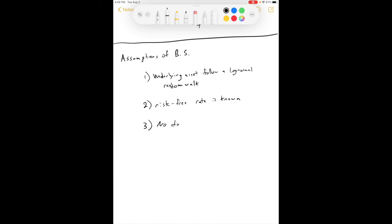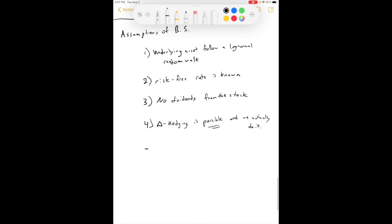Number three, there are no dividends. Okay? No dividends from the stock. Number four, delta hedging is possible. Which we know it's not. And we actually do it. It's very important. Not only is it possible, but we already do it.